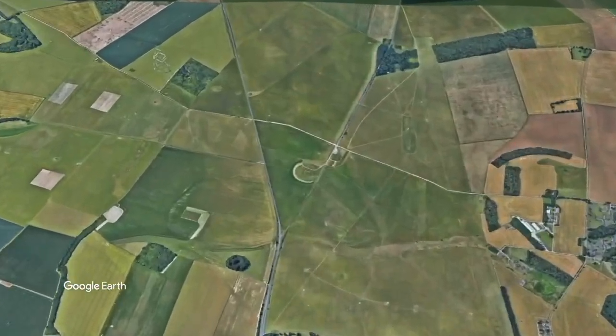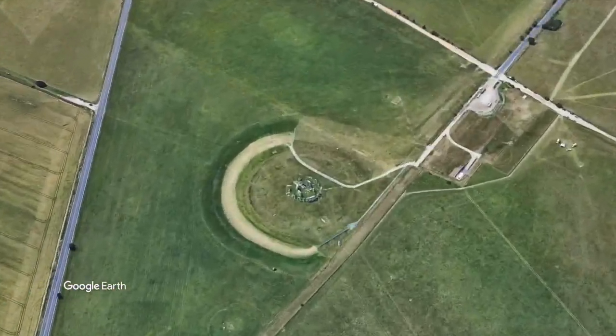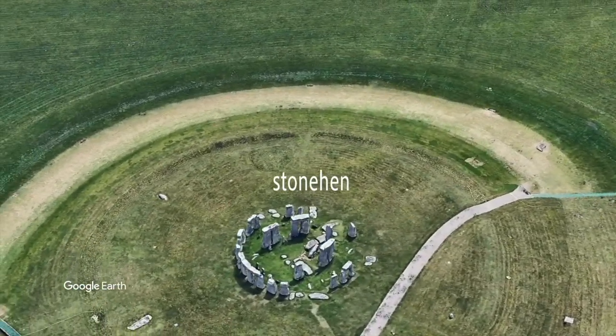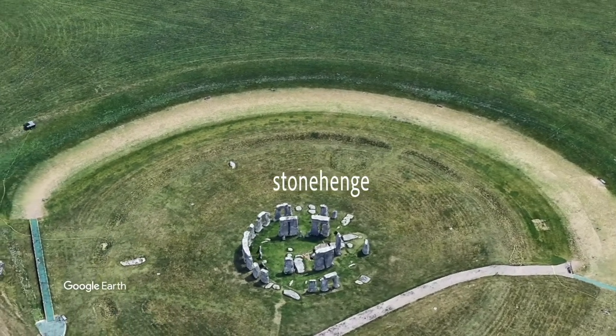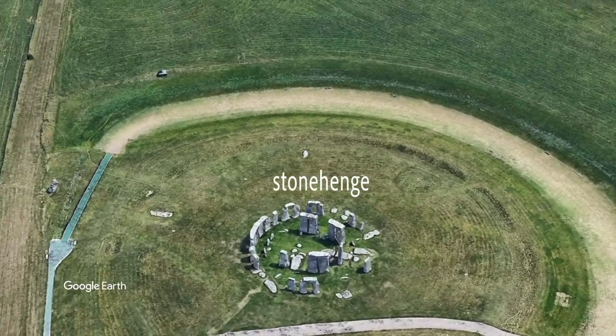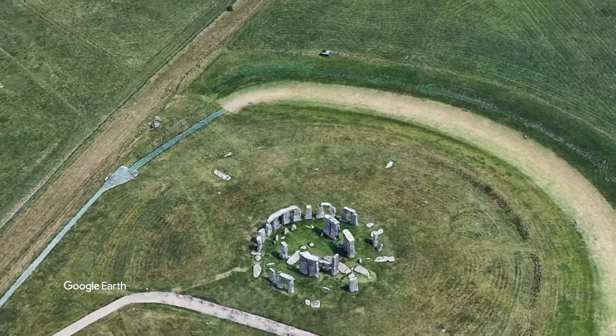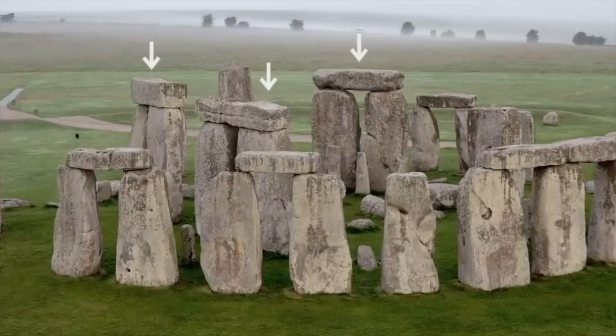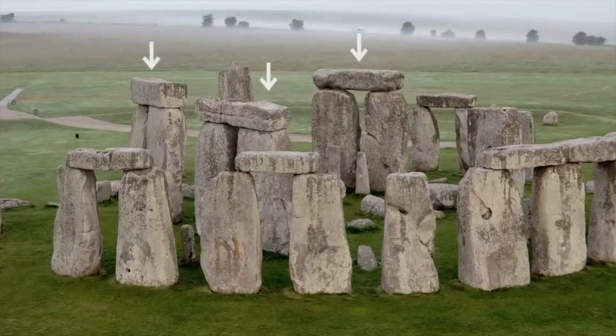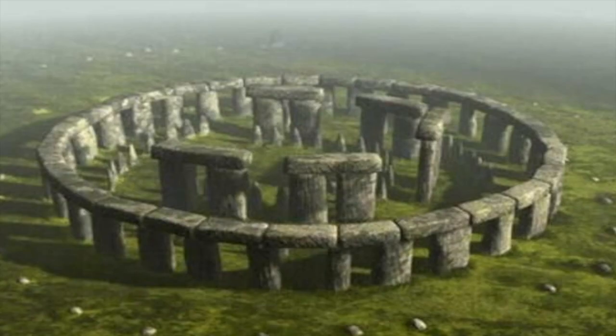Stonehenge is a prehistoric monument in Wiltshire, England, two miles west of Amesbury that consists of several concentric circles and semi-circles with stones, earthen ditches, and mounds. The tallest structure consists of larger vertical blocks, four meters each, connected at the top by a massive lintel, forming the known five trilithons at the center of Stonehenge.